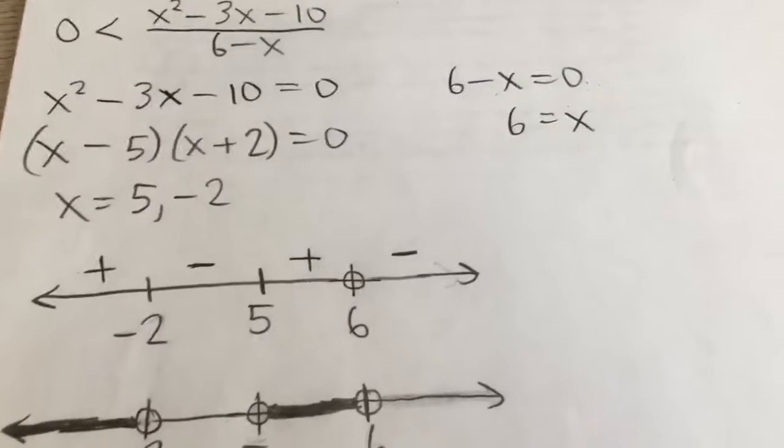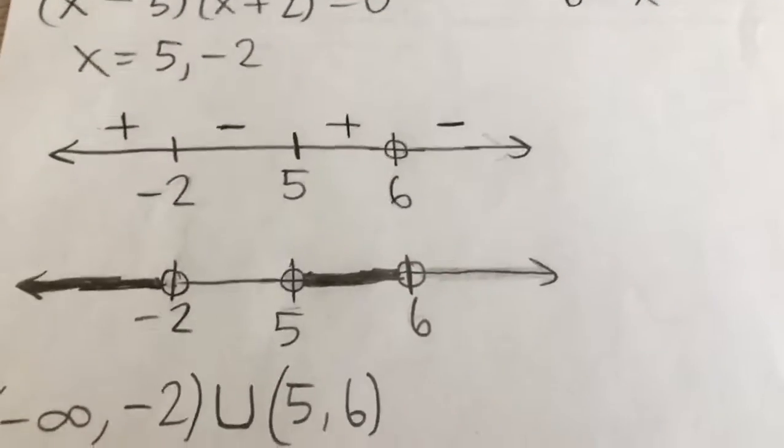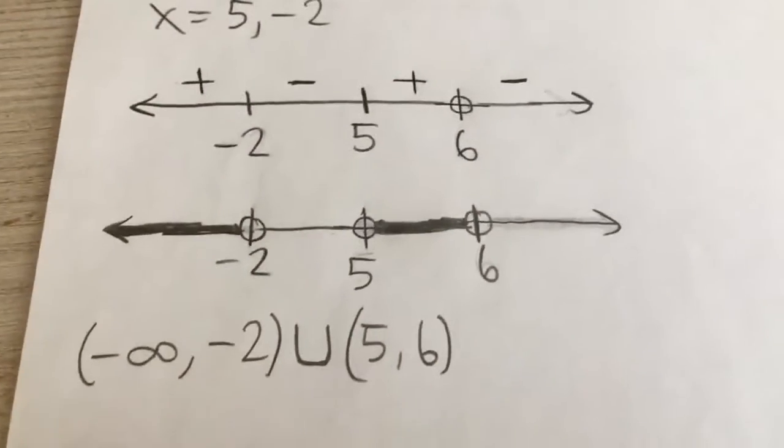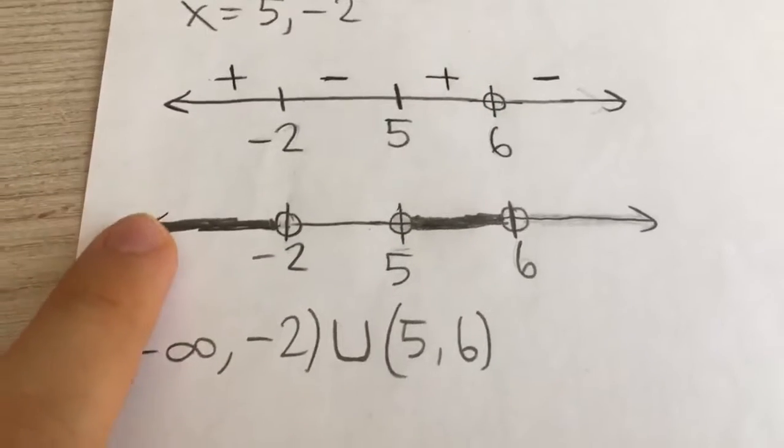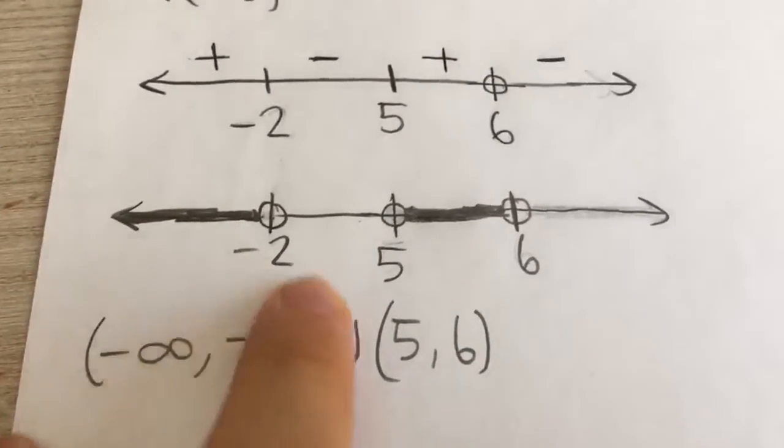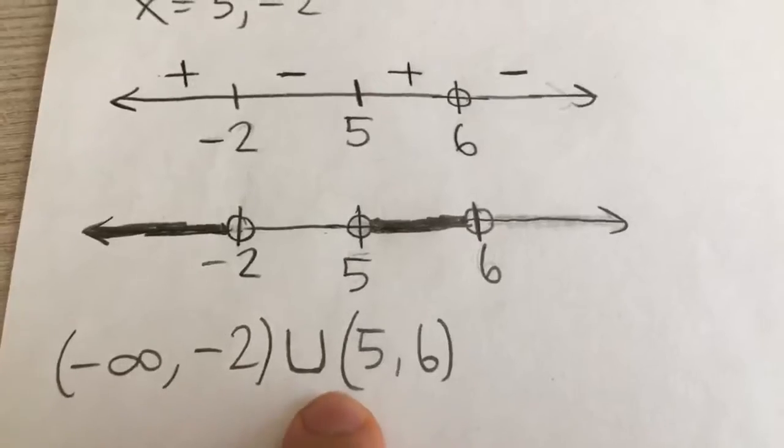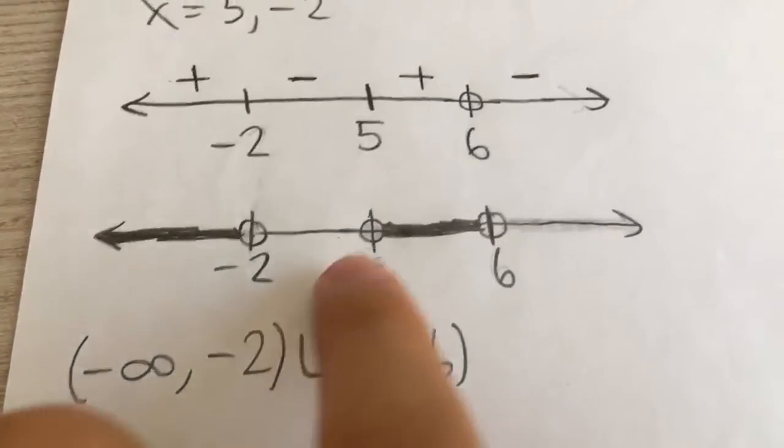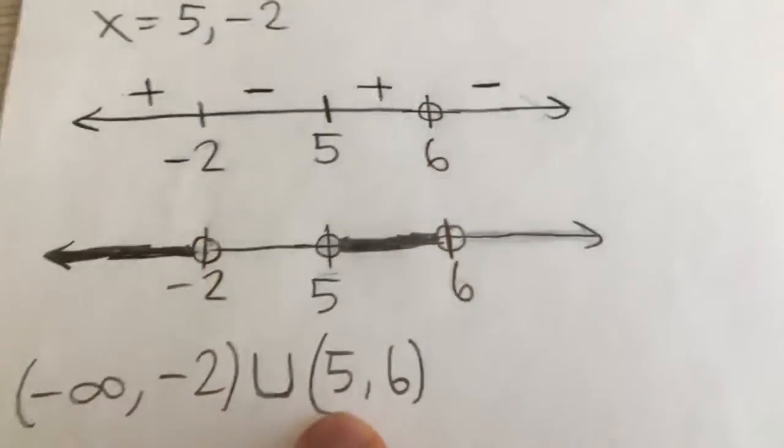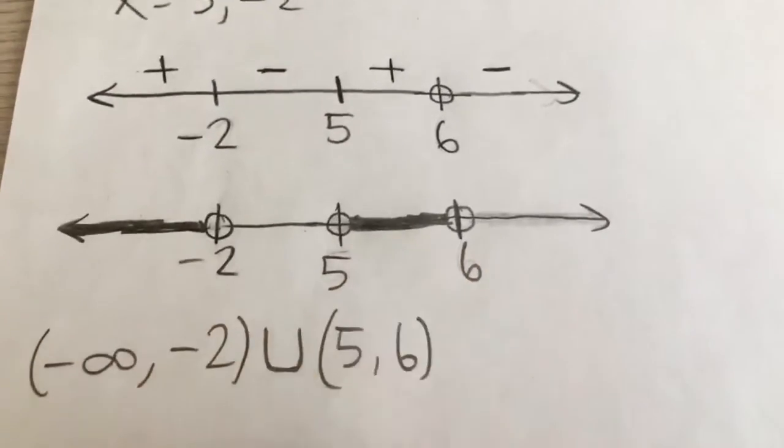The fraction is undefined. It's not positive, negative, or 0 at 6. And so, for our final answer, it's from negative infinity all the way to the left up to negative 2, not including negative 2, and 5 to 6. That's positive in that region as well, not including 5 or 6.